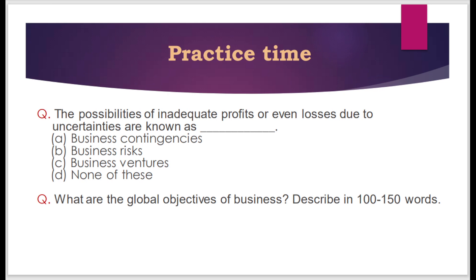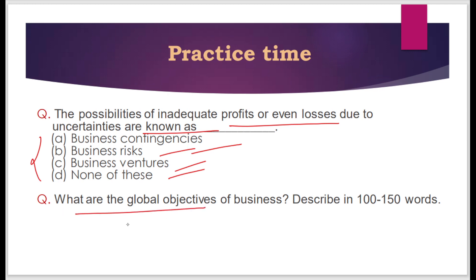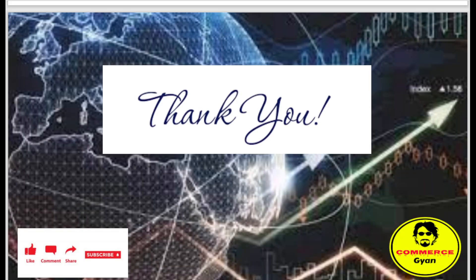Now there is a question based on this topic: The possibility of inadequate profit or even losses due to uncertainties is known as — business contingency, business risk, business venture, or none of these? Please write the correct answer in the comment section and explain it in your own way. That's it for this video, thanks for watching.